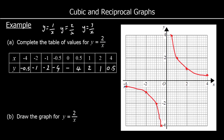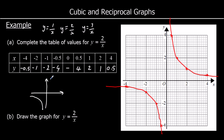If we kept going with bigger and bigger values, you'll notice a pattern where these lines get closer and closer to 0 but they never actually reach it. This is the shape of a positive reciprocal graph — a positive reciprocal graph is always in this kind of shape.